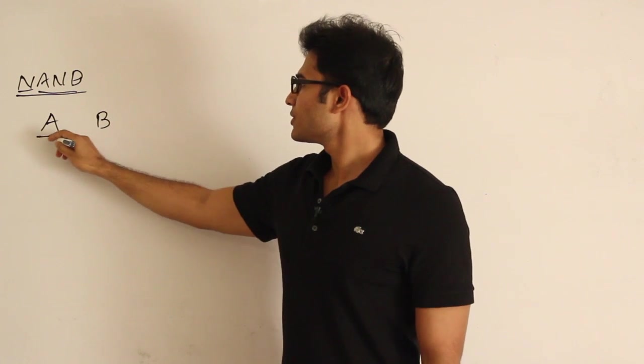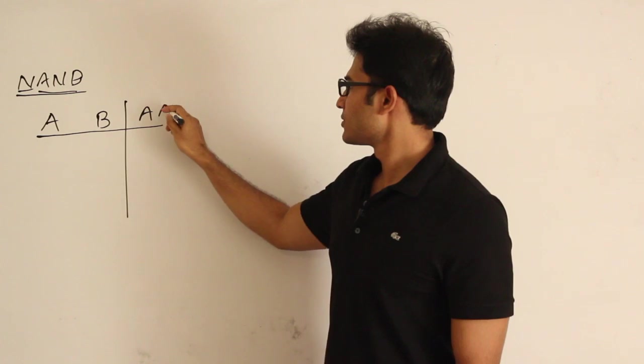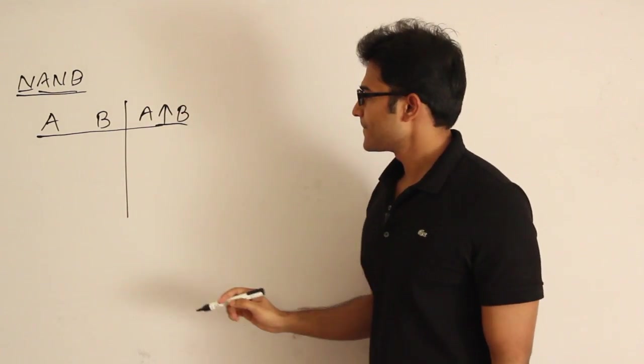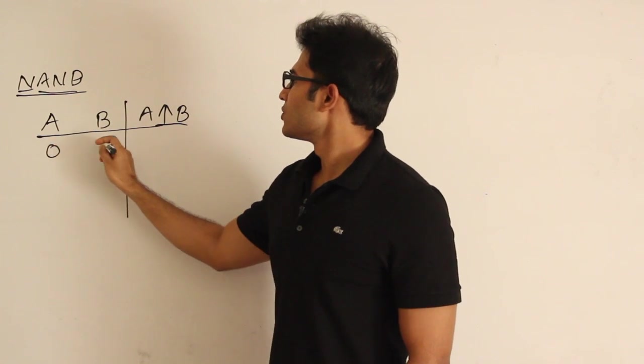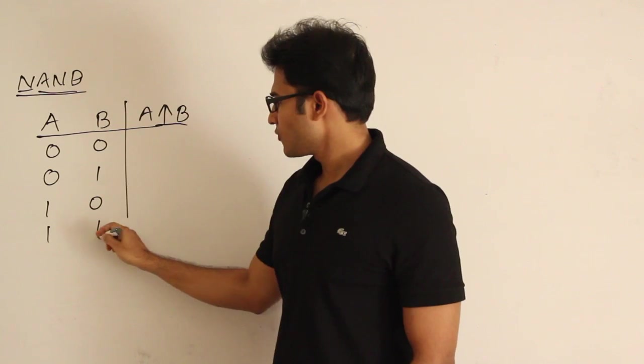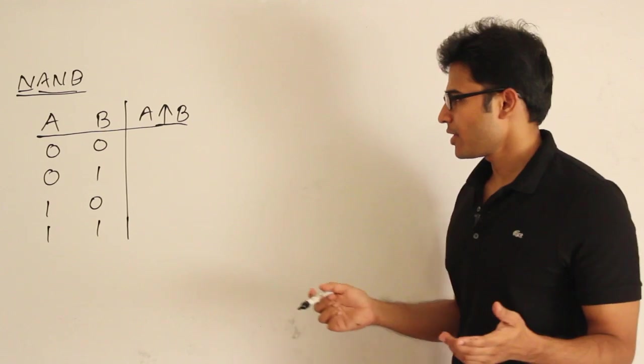The symbol for NAND is represented like this. For the truth table: 0,0; 0,1; 1,0; 1,1. The logic for NAND is that it is exactly the complement of AND.